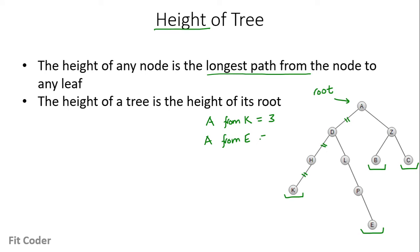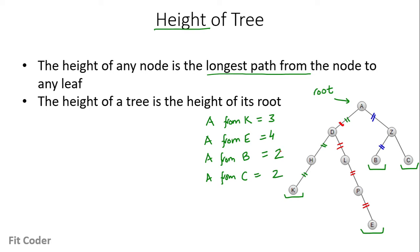The distance of A from E is 4 — 1st, 2nd, 3rd and 4th edge. The distance of A from B is 2, because there are 2 edges. And the distance of A from C is also 2.